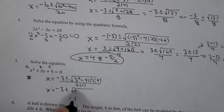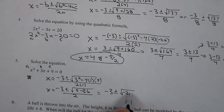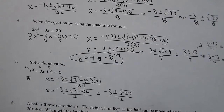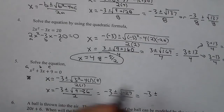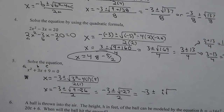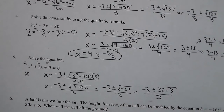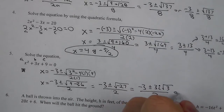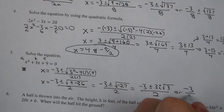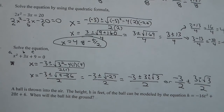So we get negative 3 plus or minus the square root of 9 minus 36, all of that over 2. We get negative 3 plus or minus the square root of negative 27 over 2. Since 27 is negative, it's going to have an i on the outside. And 27 is 3 times 3 times 3, which means we can take a pair of 3s out, leaving 3 under the radical. So we arrive at negative 3 plus or minus 3i root 3 over 2. You could also write it as negative 3 over 2 plus or minus 3i root 3 over 2.